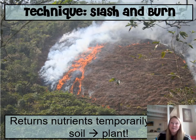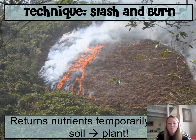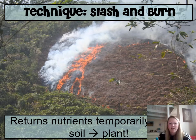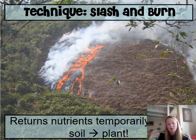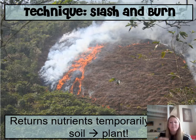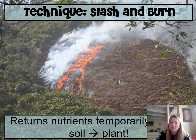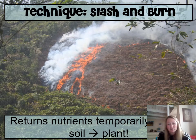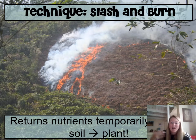One technique made famous recently is the slash and burn technique in the Amazon. You cut down the vegetation and set it on fire so that the nutrients from the plants go into the soil. Farmers then come back in and plant crops because the soil now has tons of nutrients. However, it's totally not sustainable — it only lasts about two to three years before nutrients are gone.